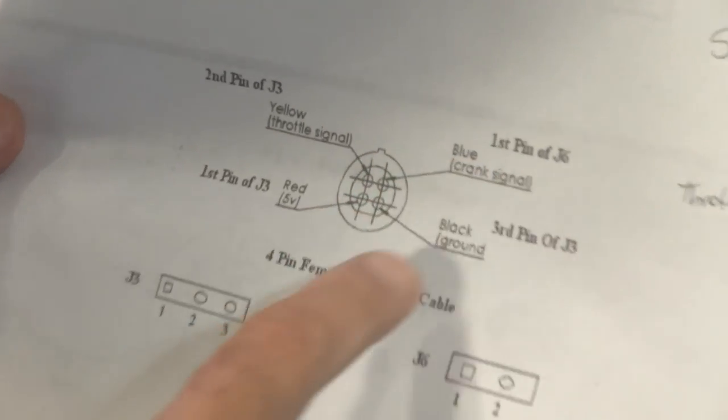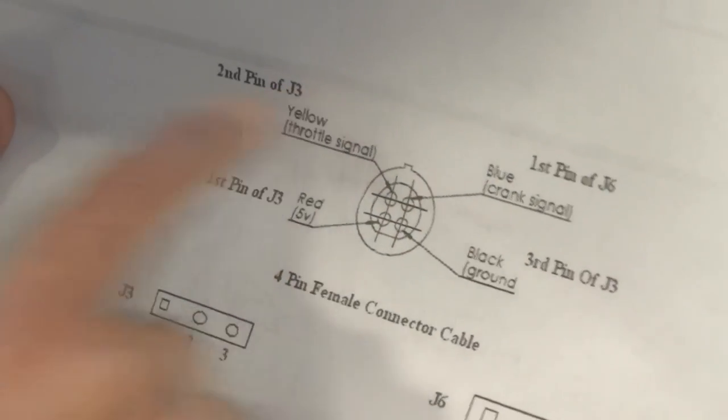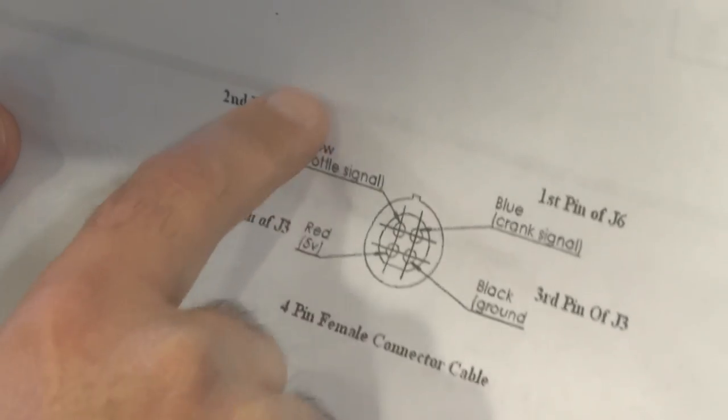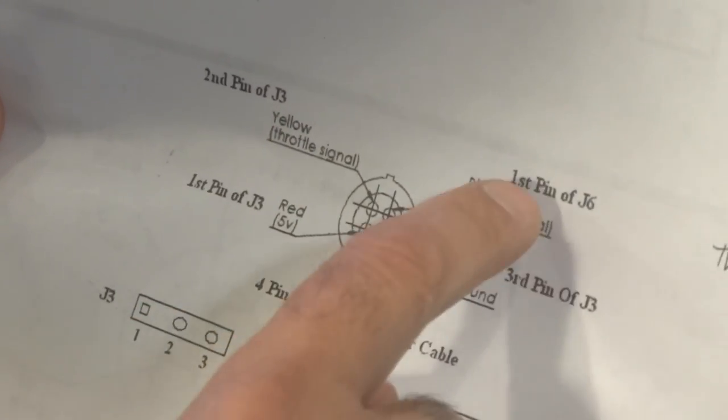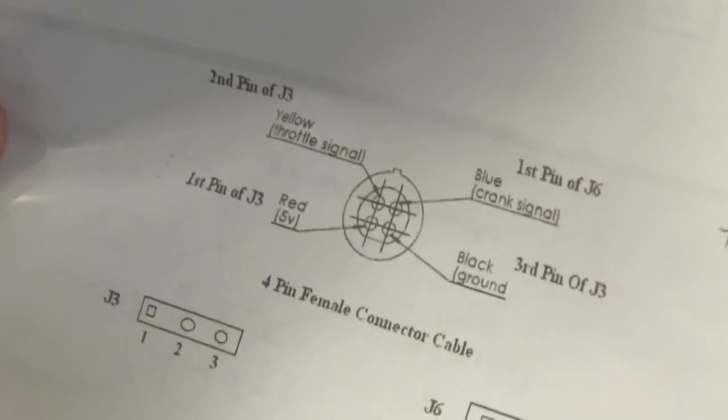We're going to hold the connector just like this and we should see 5 volt here, 0 here, 5 volt here, 5 volt here. So we should have 3 five volts and 1 zero volt. So let's see what we get.